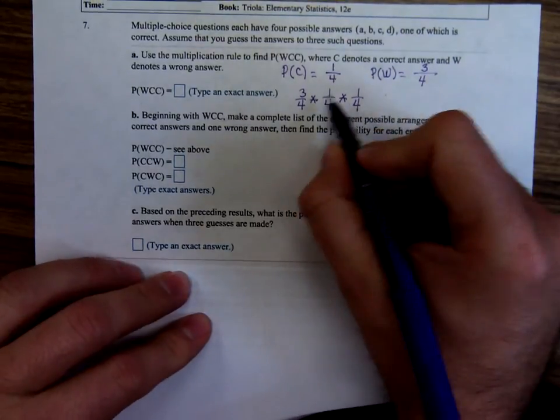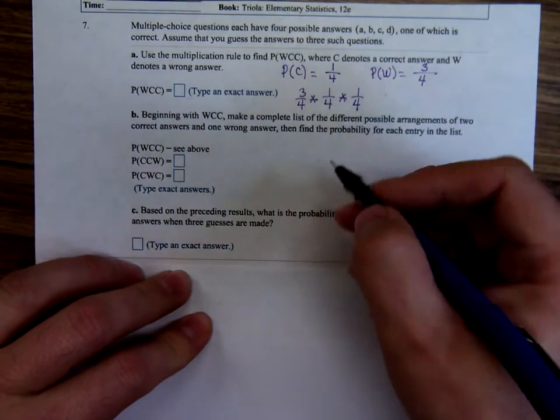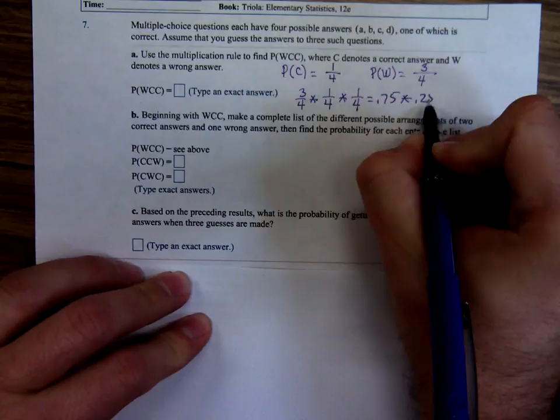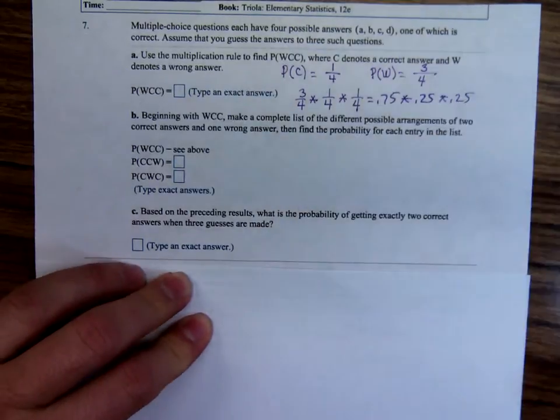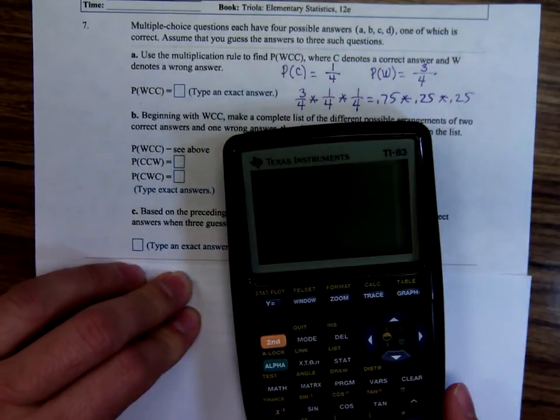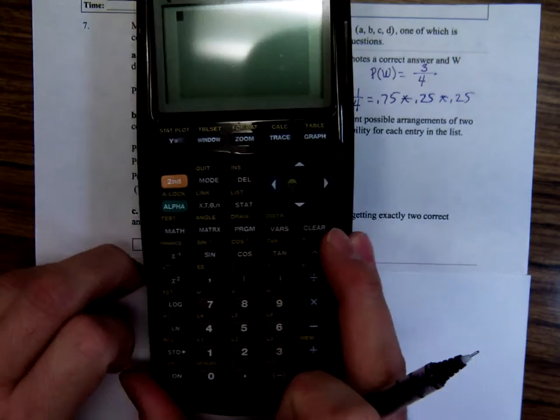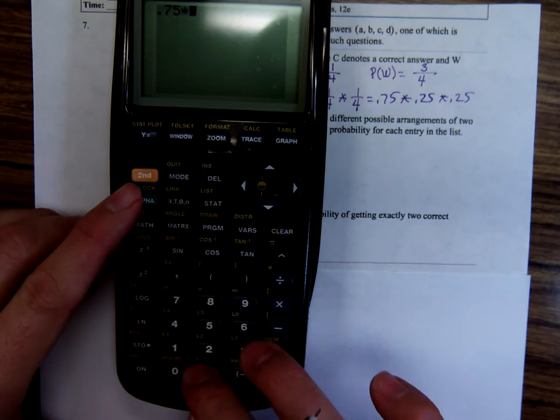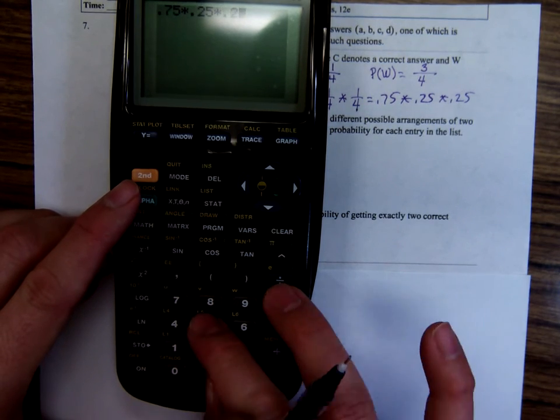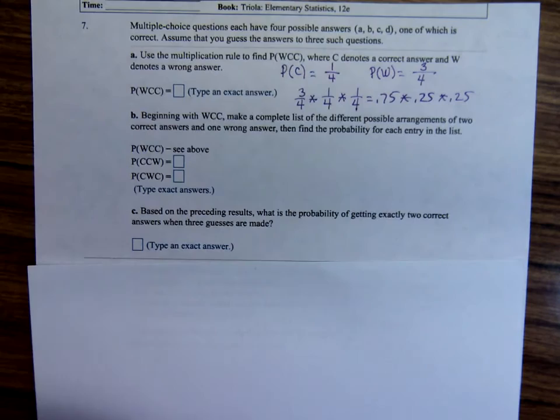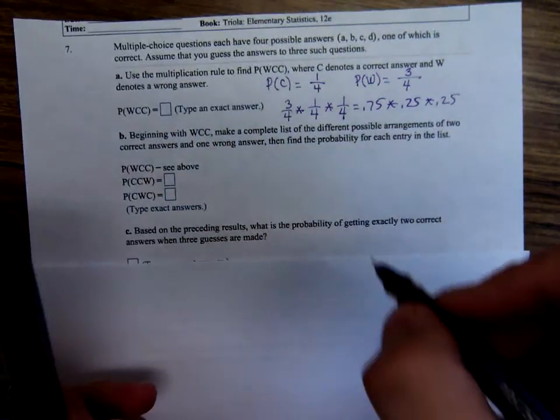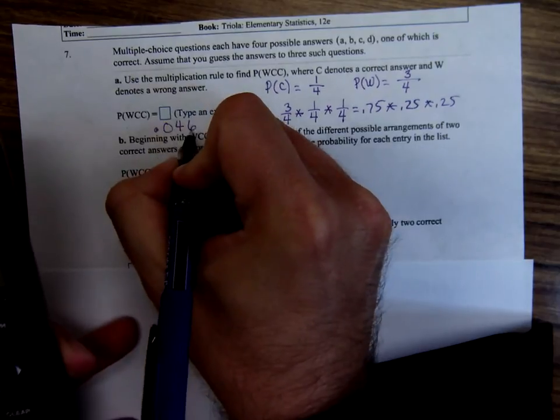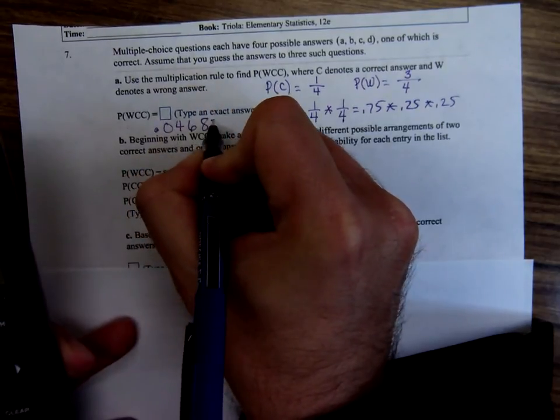Or if we want to do this as a decimal, I guess maybe that would be better. 0.75 times 0.25 times 0.25. Punching that into the calculator, 0.75 times 0.25 times 0.25. That's going to be 0.046875. 0.046875.